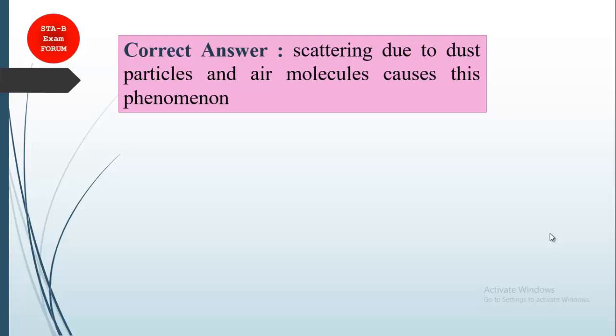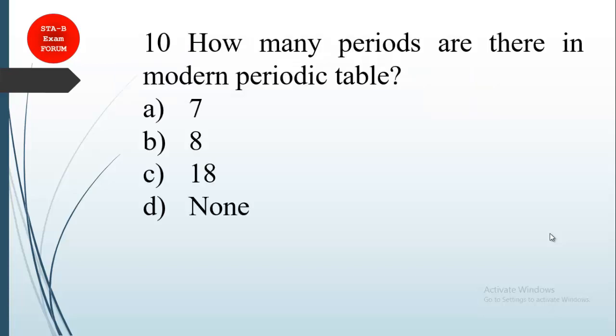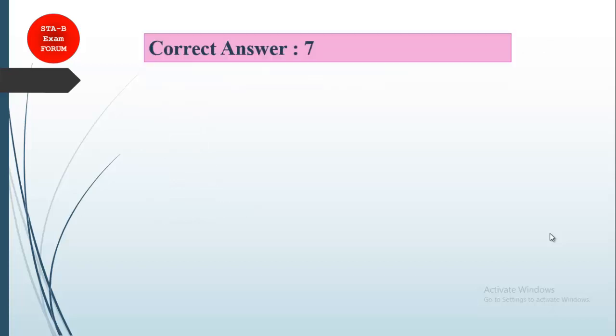Coming to the next question from chemistry, this will be the last for this part. How many periods are there in modern periodic table? We know there are seven periods and 18 groups. The correct answer is option A, seven. We have seven periods in modern periodic table.